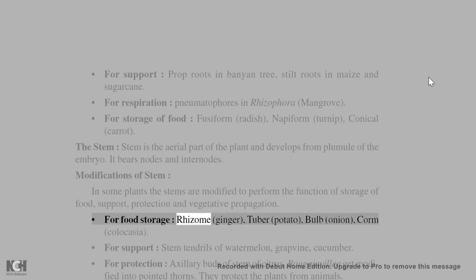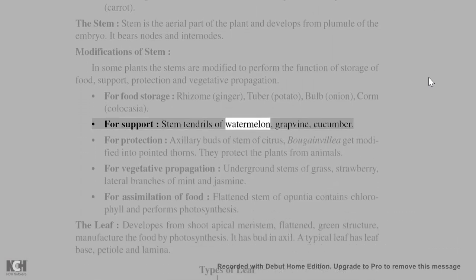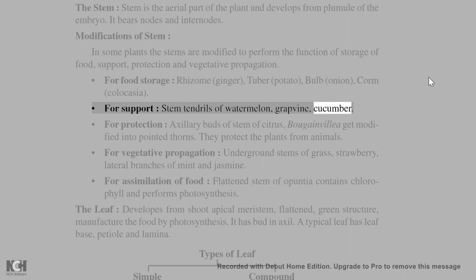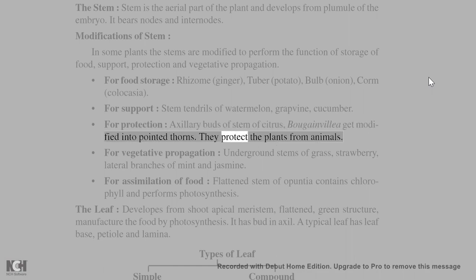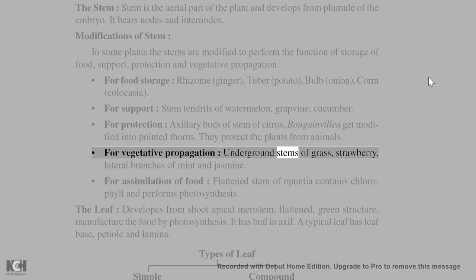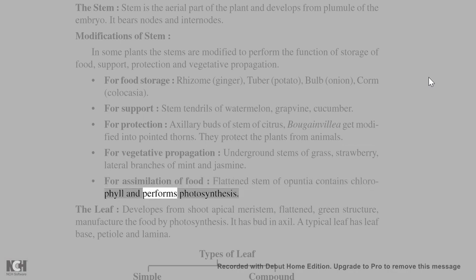Stem modifications: for food storage — rhizome (ginger), tuber (potato), bulb (onion), corm (colocasia). For support — stem tendrils of watermelon, grapevine, cucumber. For protection — axillary buds of stem of citrus and bougainvillea get modified into pointed thorns; they protect the plants from animals. For vegetative propagation — underground stems of grass, strawberry, lateral branches of mint and jasmine. For assimilation of food — flattened stem of opuntia contains chlorophyll and performs photosynthesis.